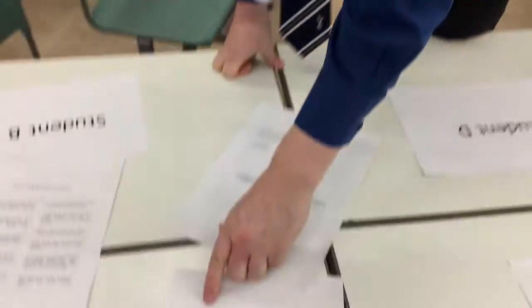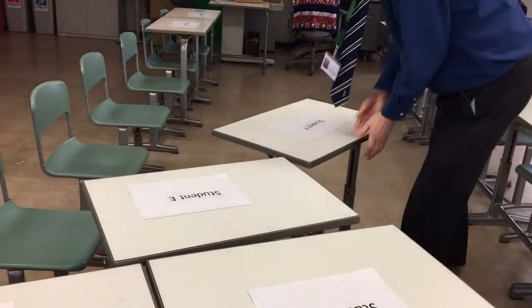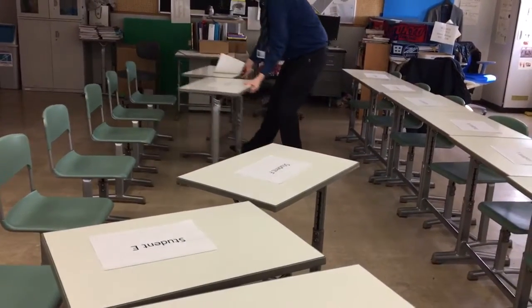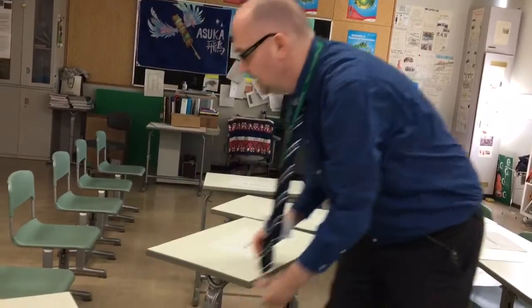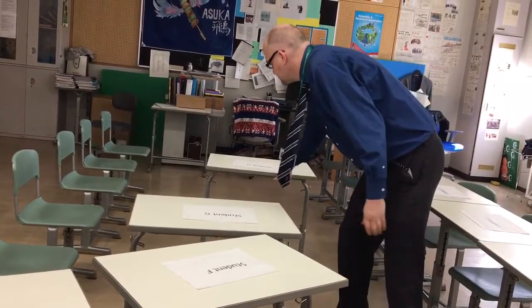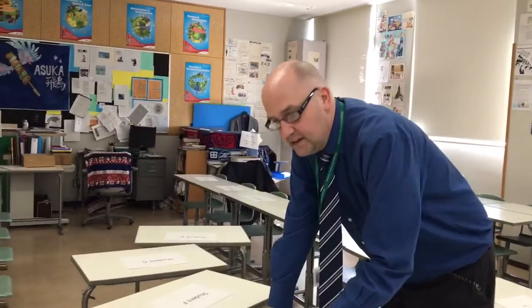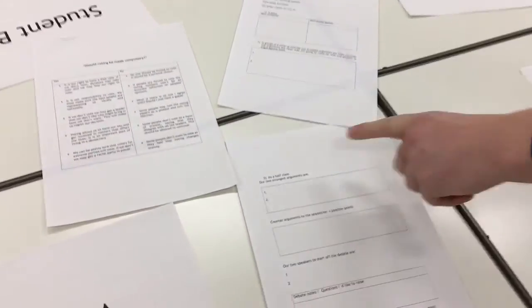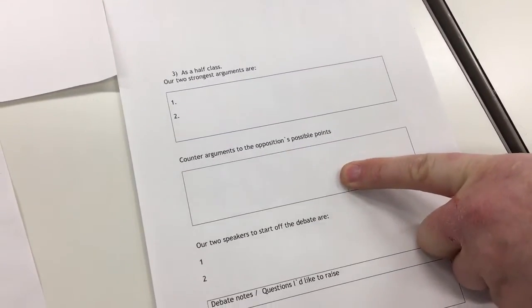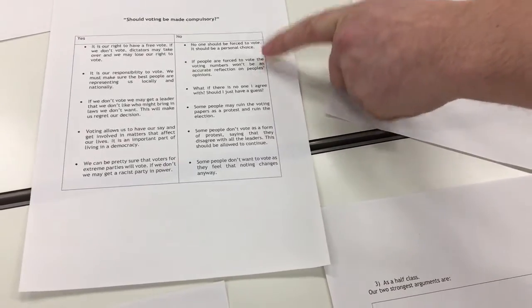In part three, the group of four becomes eight — half the class. They're getting ready for the final stage: coming up with their top two opening arguments for yes, voting should be compulsory. They're now working as a team in a big group activity, sharing ideas, agreeing with each other, and backing their ideas up. As a half class, they've now got their two strongest arguments, and they've also been thinking about counter-arguments to the opposition's possible points — "What if they say this? What if they say that? How can we counter-argue?"